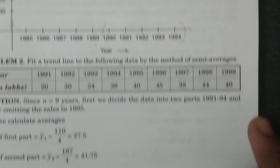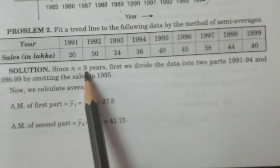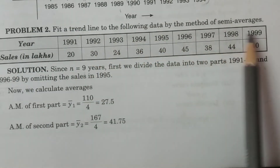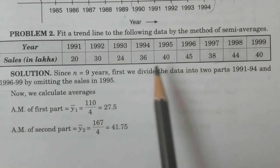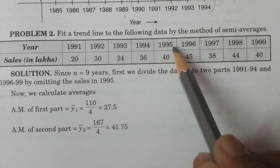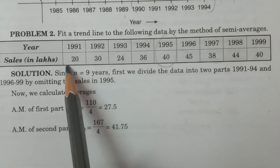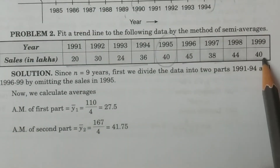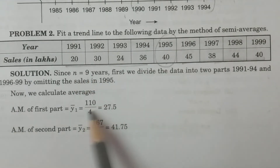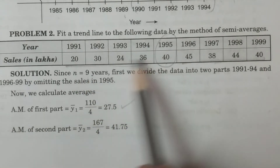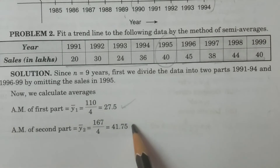Similarly, for an odd number of years — this is another problem which consists of an odd number of years. N is equal to nine years. In this case you omit the middle period, which is 1995. You take two particular parts: the first part is four years and the second part is four years, leaving out the middle year. The arithmetic mean of the first four years and the arithmetic mean of the next four years are calculated.